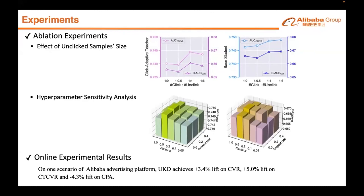As to online experiments, on one scenario of Alibaba's advertising platform, we observe that UKD achieves a 3.4% lift on CVR, 5% lift on CT-CVR, and a minus 4.3% lift on CPA.